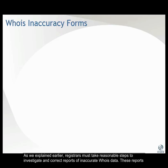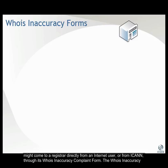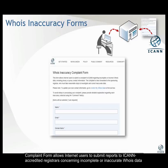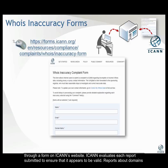As we explained earlier, registrars must take reasonable steps to investigate and correct reports of inaccurate WHOIS data. These reports might come to a registrar directly from an Internet user or from ICANN through its WHOIS Inaccuracy Complaint Form. The WHOIS Inaccuracy Complaint Form allows Internet users to submit reports to ICANN-accredited registrars concerning incomplete or inaccurate WHOIS data through a form on ICANN's website.